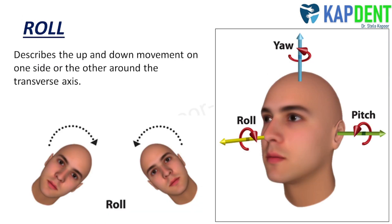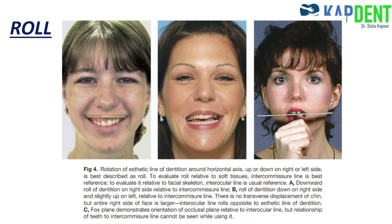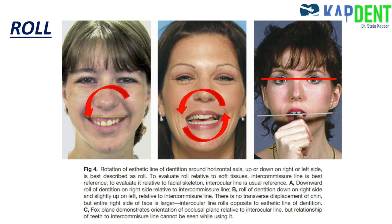The second term is roll. Roll describes the up and down movement on one side or the other around the transverse axis. To evaluate roll relative to the soft tissues, the intercommissural line is the best reference, although the interocular line is the usual reference utilizing the Fox plane. The first figure shows a downward roll of dentition on the right side. The second picture shows a downward roll on the right side and slightly up on the left. The third picture demonstrates the usage of the Fox plane, showing the orientation of the occlusal plane relative to the interocular line.